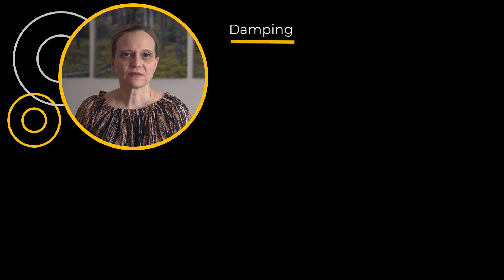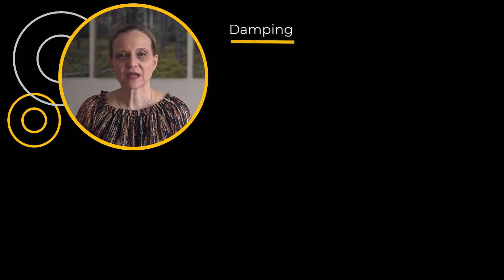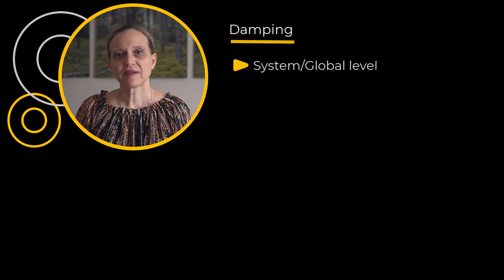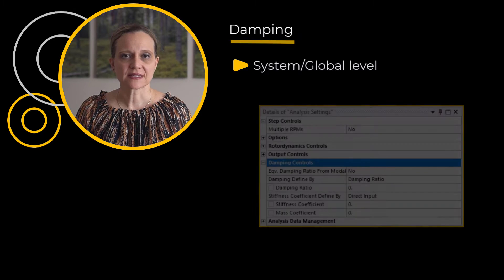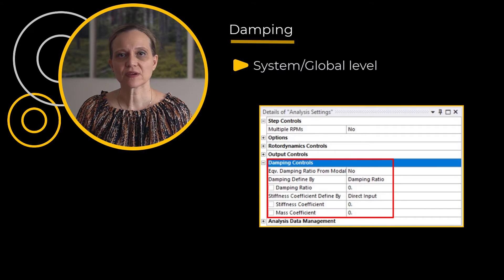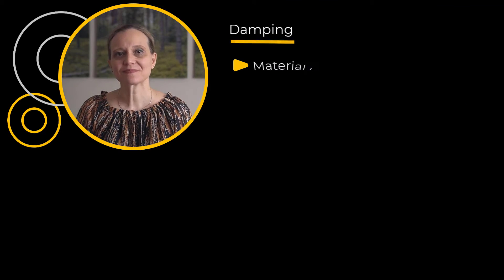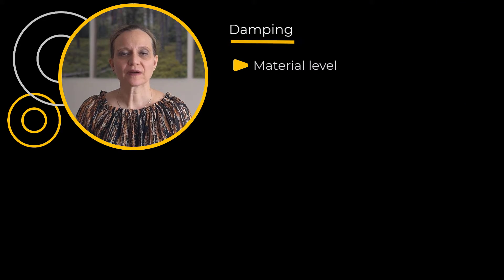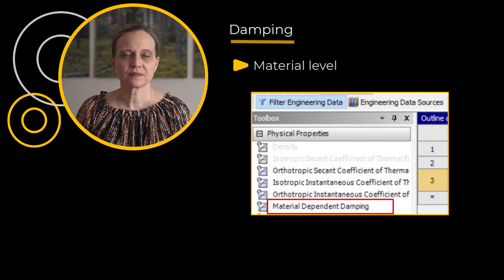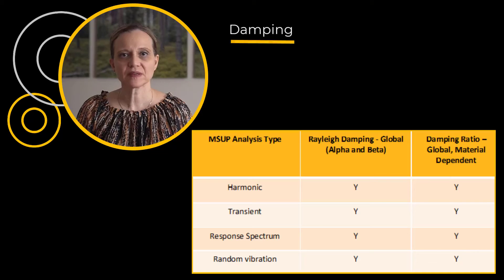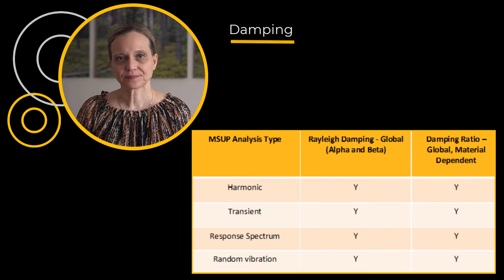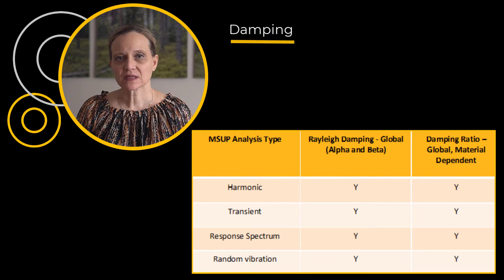These damping values may be defined on a system level, globally, affecting all parts, done via analysis settings. Or the damping ratio may be defined on a material basis, affecting all parts that have that material assigned, done via engineering data. One can refer to this table to see the damping types supported in modal-based analysis. All three damping types discussed are supported for these modal-based analyses.